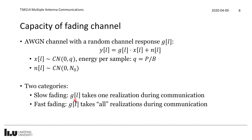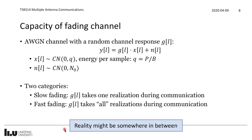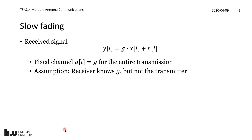We consider two categories of channels. In slow fading, G(l) takes one random realization and keeps that value throughout the entire transmission block — the fading is very slow compared to the block length. In fast fading, G(l) takes many different realizations — essentially all realizations during transmission, because the channel block is very long while channel variations are very fast. Studying these two extremes helps us understand how fading channels can behave.